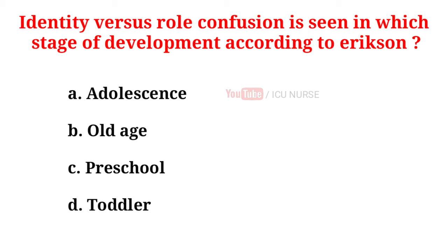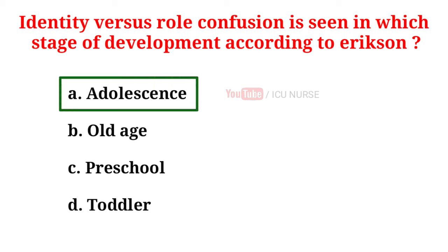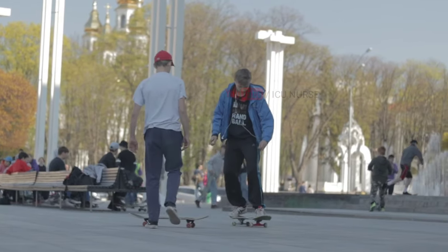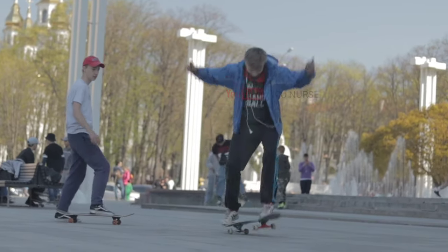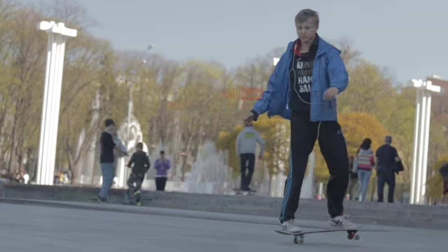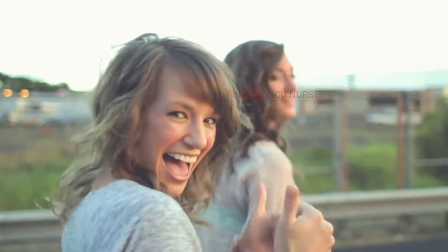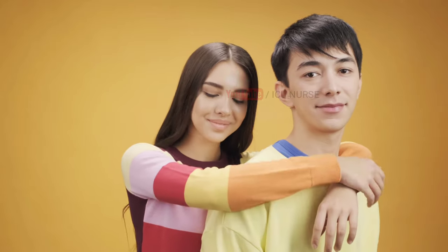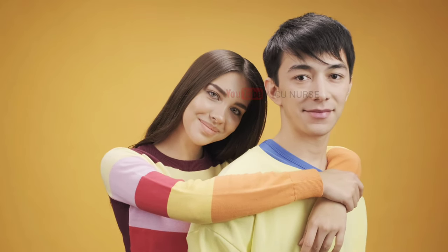Identity vs. Role Confusion is seen in which stage of development according to Erikson? A. Adolescence, B. Old age, C. Preschool, D. Toddler. And the correct answer is A. Adolescence. Identity vs. Confusion is the fifth stage of ego according to psychologist Erik Erikson's theory of psychosocial development. This stage occurs during adolescence between approximately ages 12 and 18, during which adolescents explore their independence and develop a sense of self.